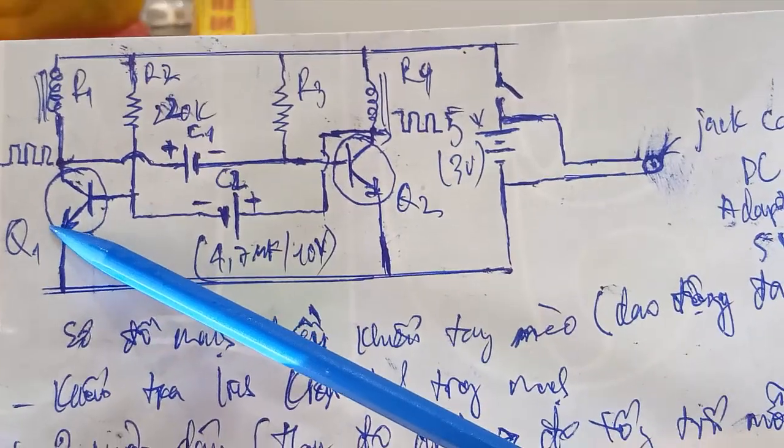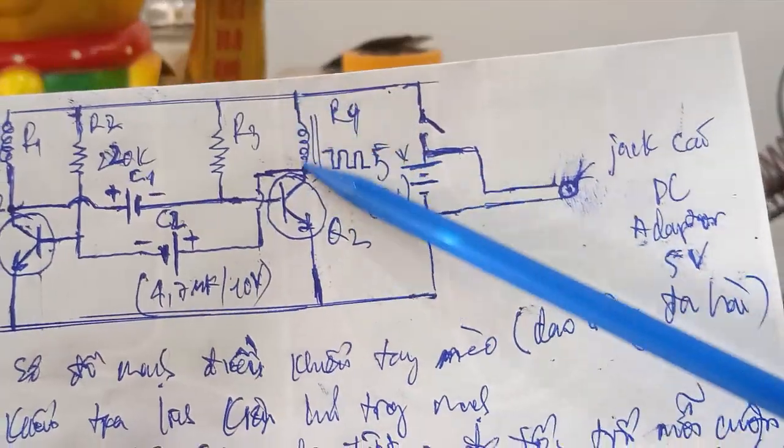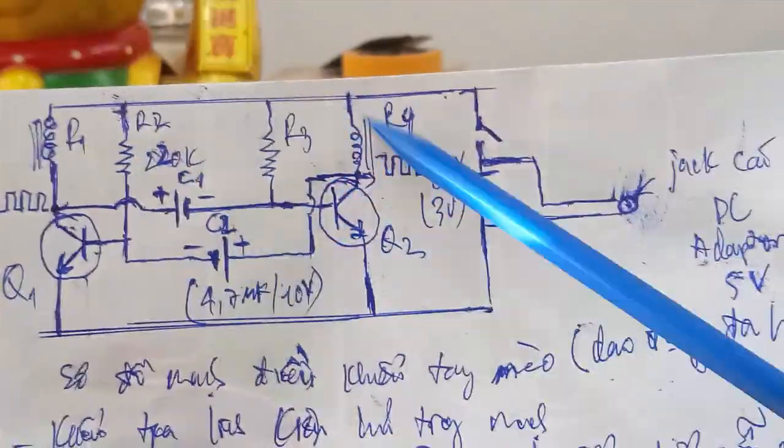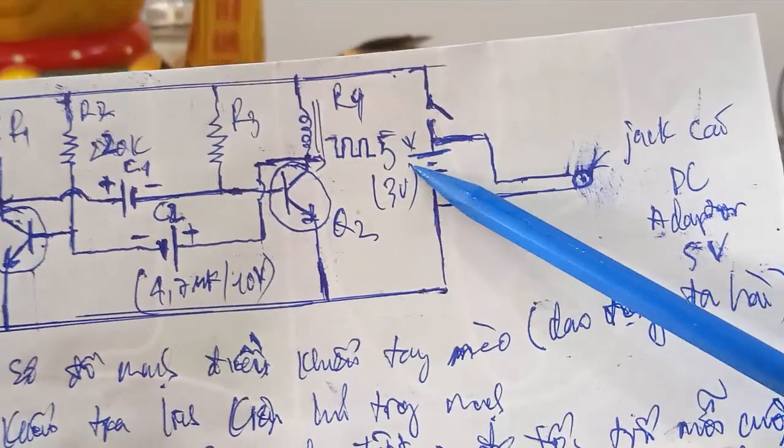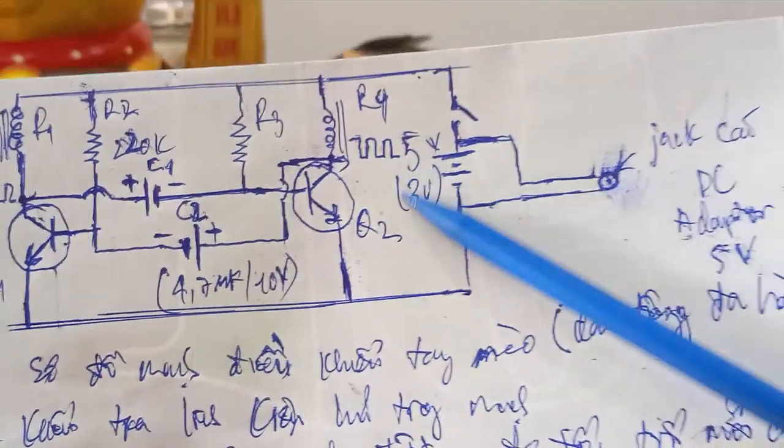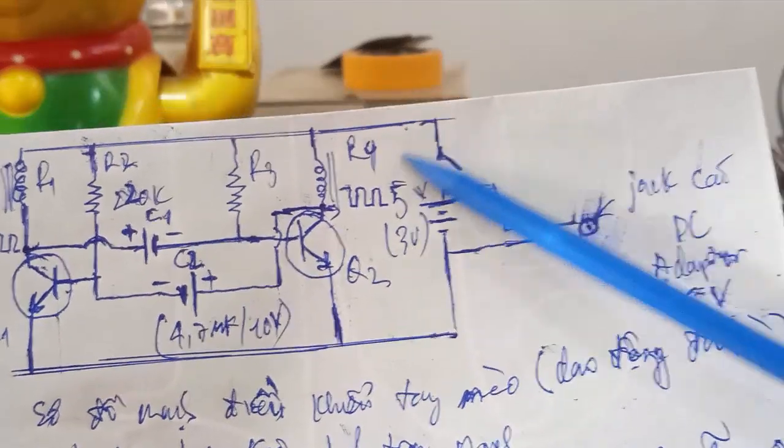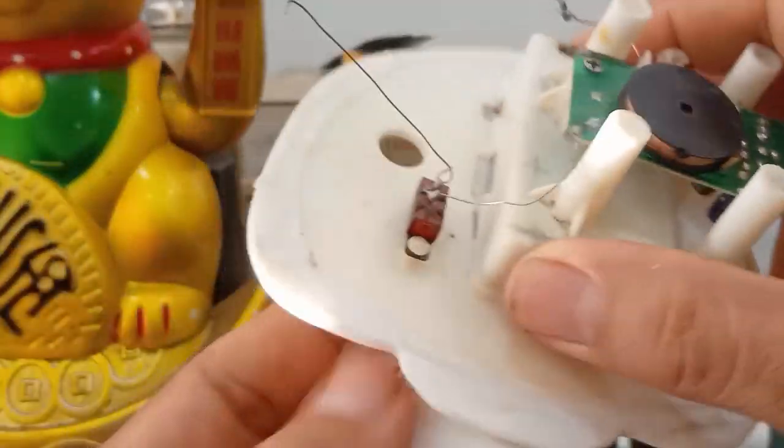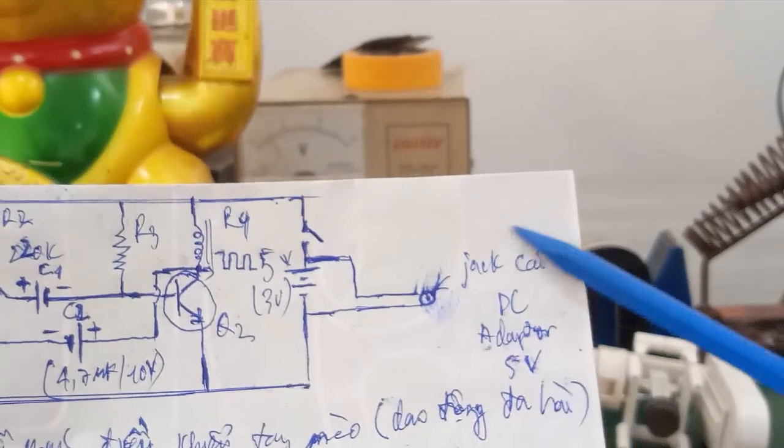Một số các bạn muốn tìm hiểu, thì các bạn có thể lên mạng. Các bạn tìm hiểu. Đây, hai con transistor ngược NPN Q1, Q2. Đây là hai cuộn dây. Hai cuộn dây nó nối với nhau. Một chân nó nối với nhau. Nối vào cái nguồn DC 5V hoặc 3V. Thì các bạn có thể dùng hai cuộn pin tiểu 3V. Các bạn gắn vô nó vẫn hoạt động.